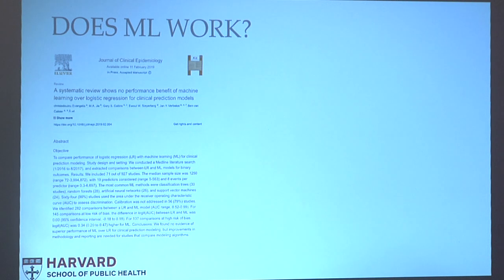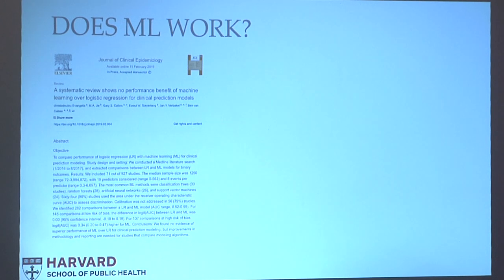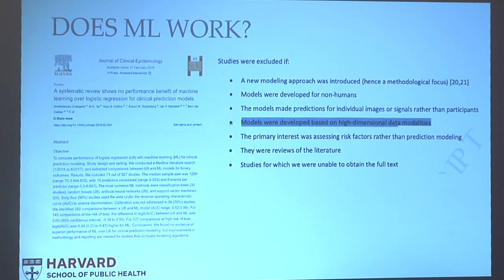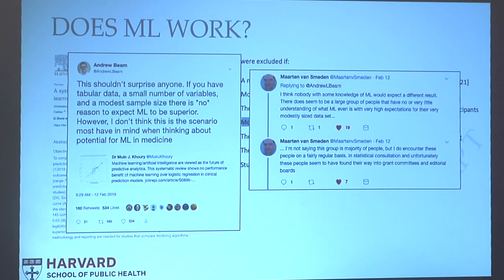I want to walk you through a Twitter exchange I had last week, to highlight that several communities working in data-driven healthcare are talking past each other. A paper published in the Journal of Clinical Epidemiology said machine learning shows no benefit for clinical risk prediction — but their inclusion criteria excluded all high-dimensional data. They only looked at studies using a small sample size and a small number of predictors. Of course, if you have small data and a small number of predictors, you shouldn't expect machine learning to solve your problem. The epidemiologists' point is that applied researchers don't have a good sense of when they should be using machine learning and when they should not.